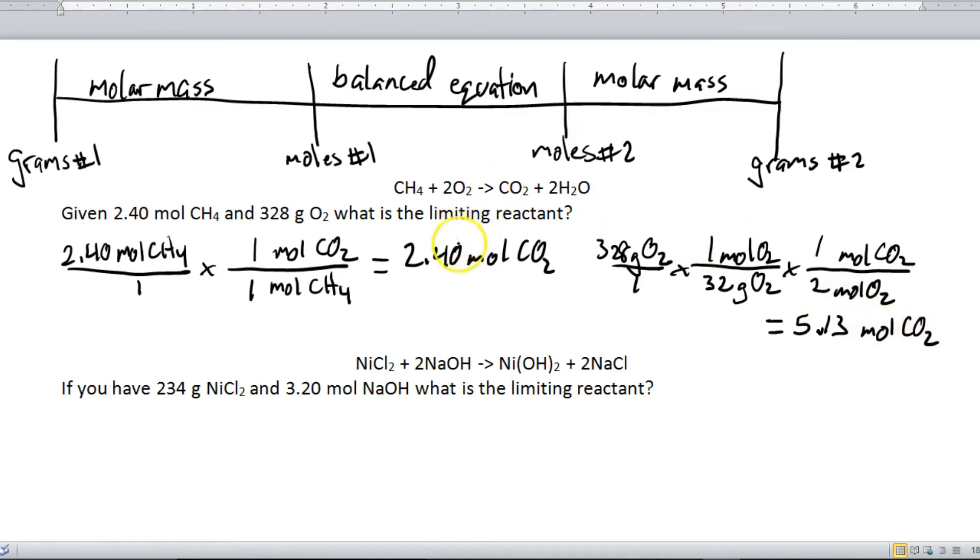So now I'm going to compare the two answers. Well clearly 2.40 moles of carbon dioxide is smaller than 5.13 moles of CO2. So that means that CH4 right here, this is my limiting reactant. LR for limiting reactant because it makes less. Which then leaves O2 here to be our excess reactant. Alright, so we've successfully identified limiting and excess reactant for that question.